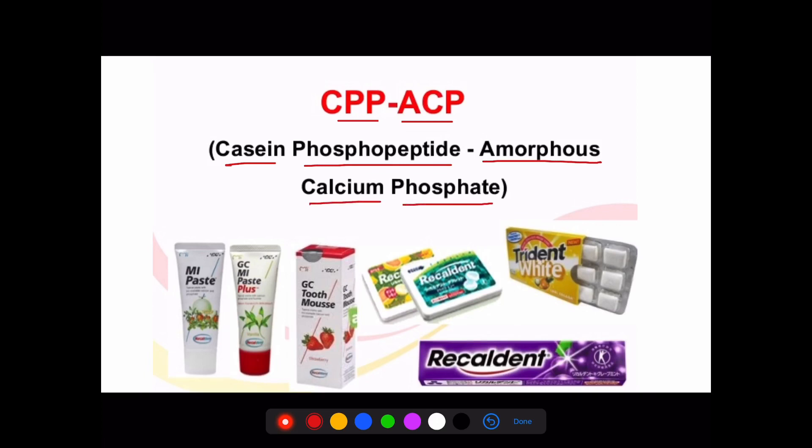This is basically a milk derived protein. You can see Casein which is a milk derived protein. This CPP-ACP is now common in many ingredients. One is you can see this in toothpaste as a paste form.